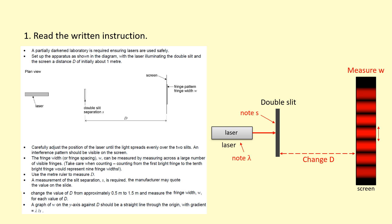You don't just measure the width of one fringe directly. You'll measure the width of a number of fringes and count them very carefully, because a lot of students miscount this. For example here it's 7, and then you divide the total distance by 7 to get the width of each fringe.